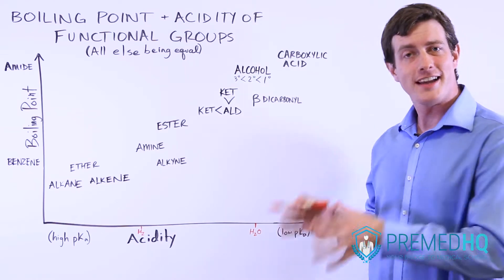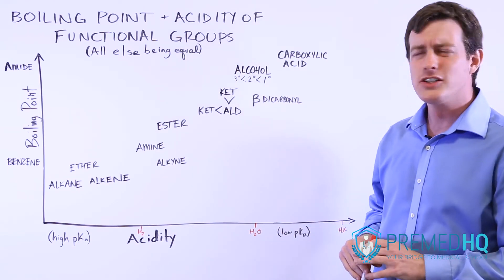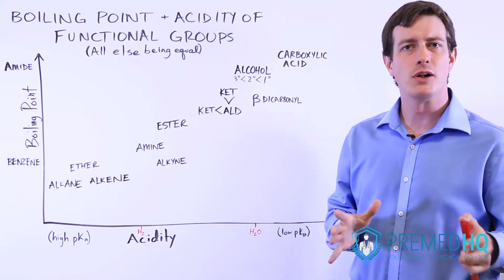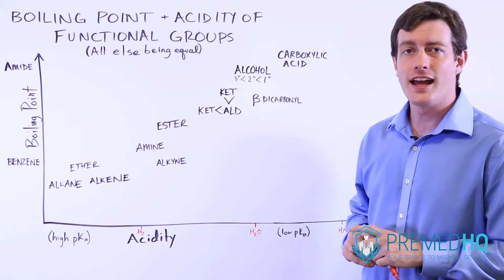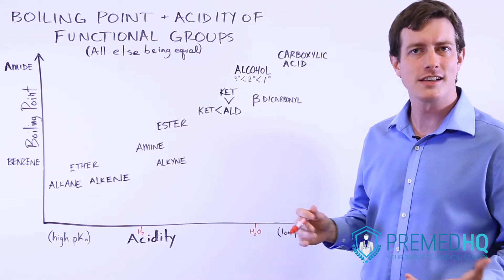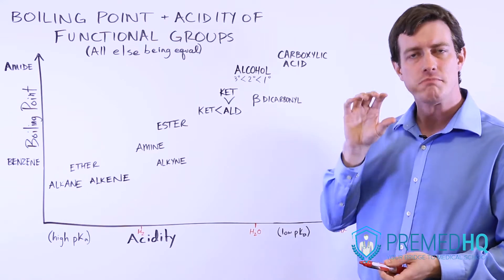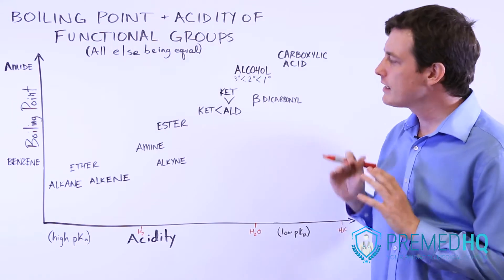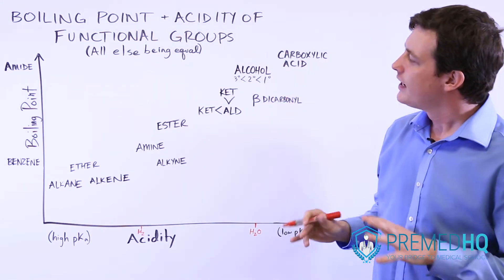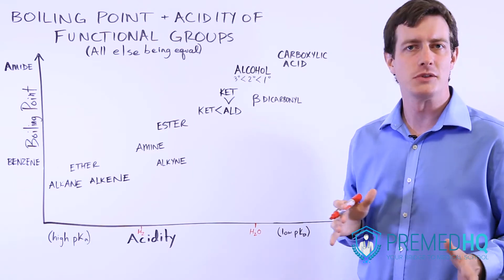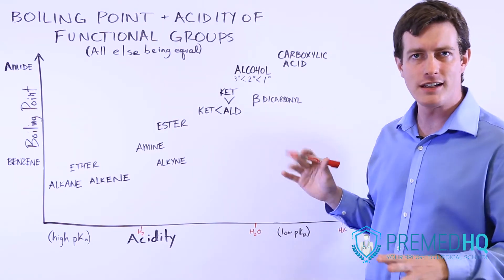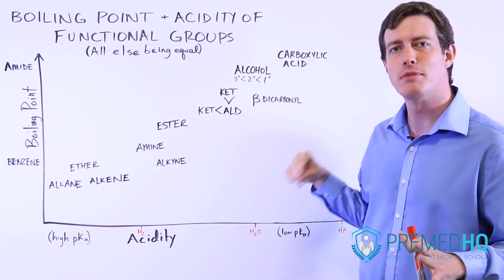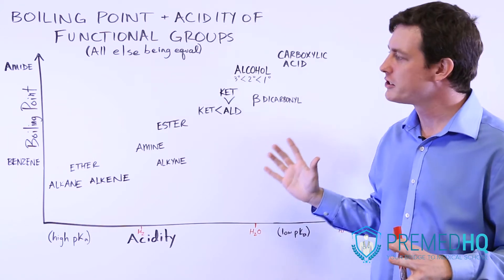A lot of problems in organic chemistry involve looking at differences in boiling point and acidity between different compounds, molecules, and functional groups. There are a lot of rules for how to analyze this, and some people like to just memorize a general trend of acidity and boiling point. But it's better if we can lay it out on a plot and understand the factors that influence boiling point and acidity, giving you general trends rather than the answer to every question.